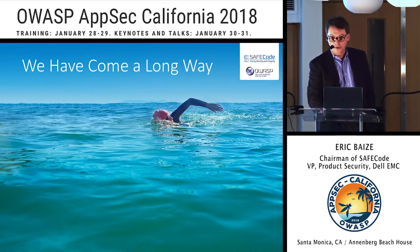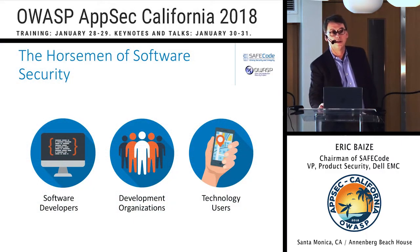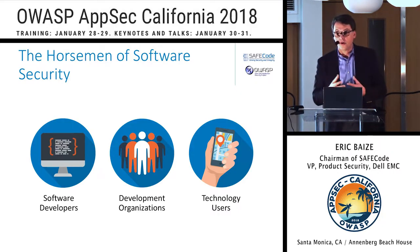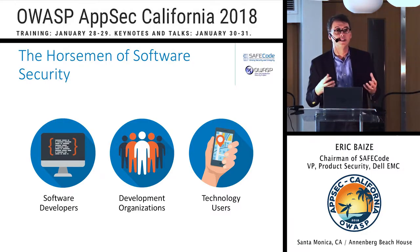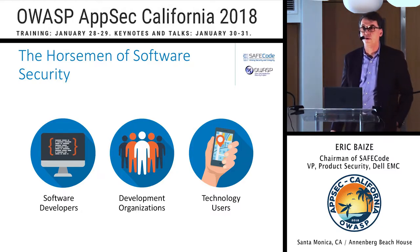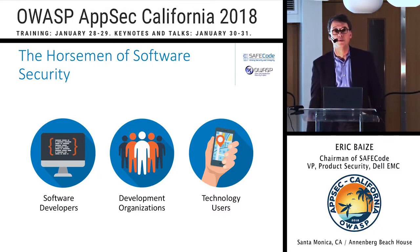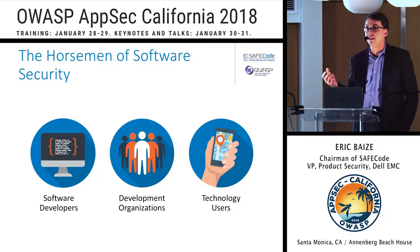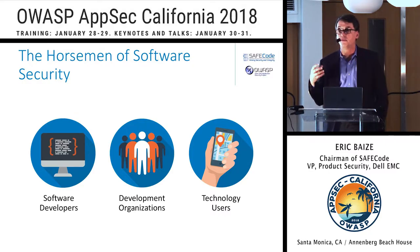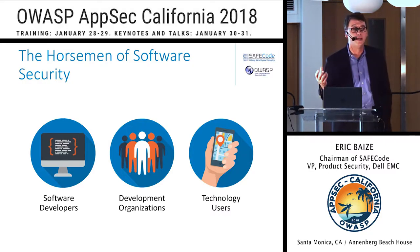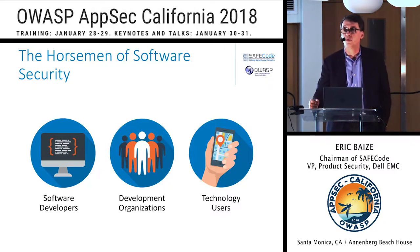Now is a good time to introduce what we call the three horsemen of software security — a group of stakeholders that have the most influence on shaping software security and that will continue to shape how software security is being adopted. The first is the software developer. At the end of the day, the developer is the one that creates the code — whether for an open source project, for his or her employer, or as a hobby.